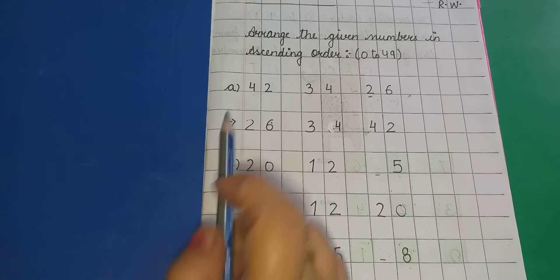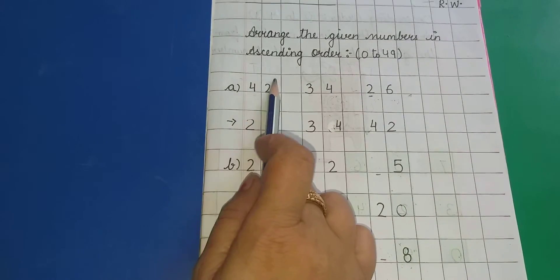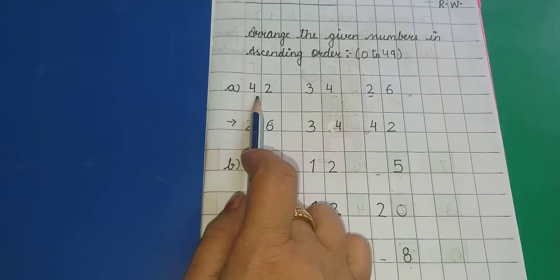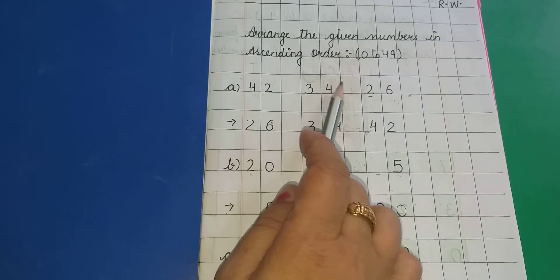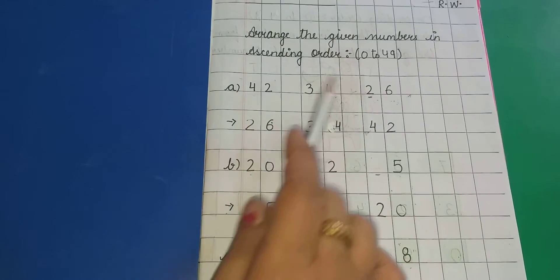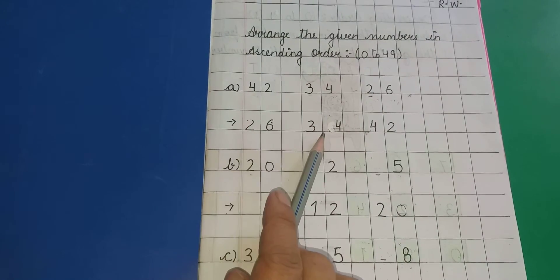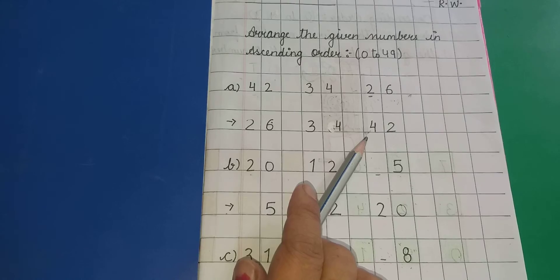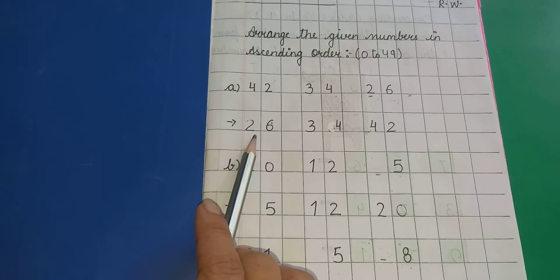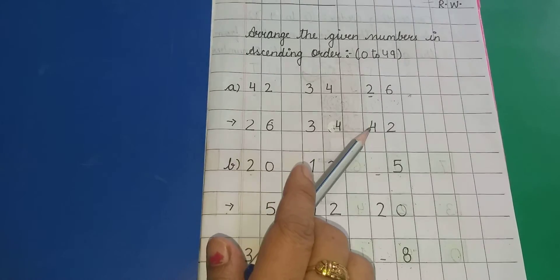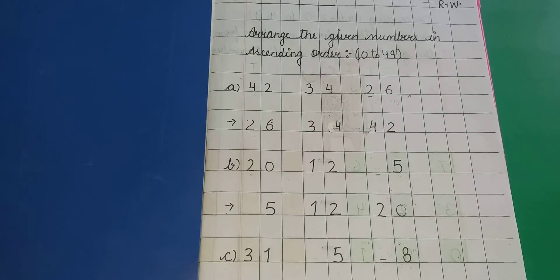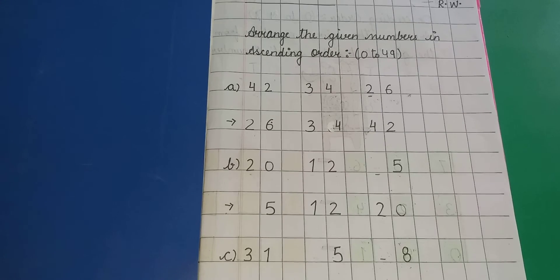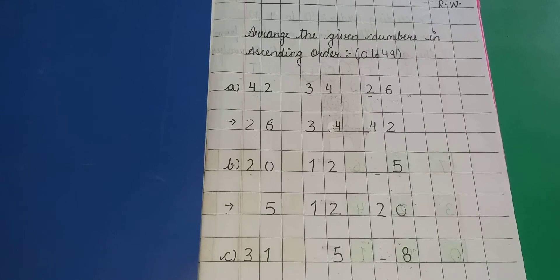So kids, easily — tens और ones लिखकर, आप numbers को compare करके उनको ascending order, means smallest to greatest number, arrange कर सकते हैं. Hope you all have understood the concept. Bye for now, see you in the next video.